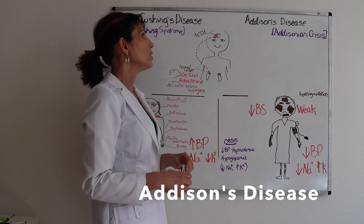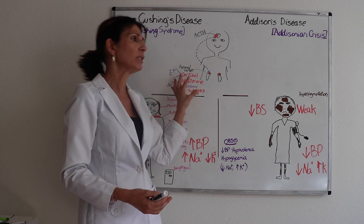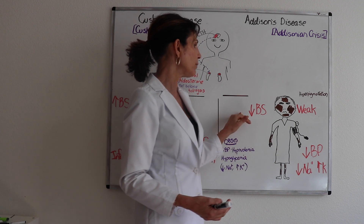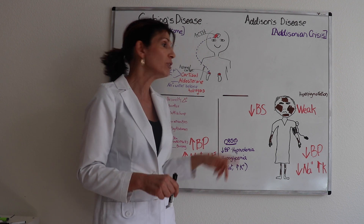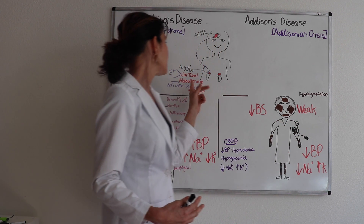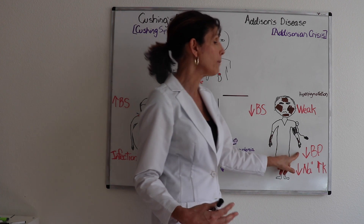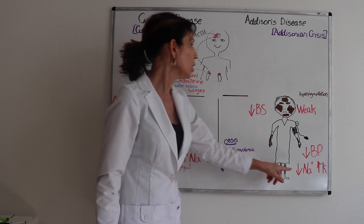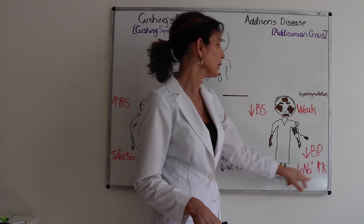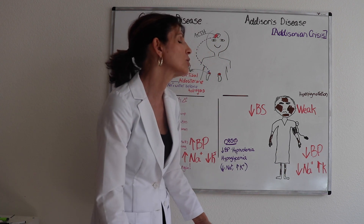Addison's disease is the opposite disorder — a depletion of adrenal cortex hormones. A depletion of cortisol causes hypoglycemia and decreased gluconeogenesis, along with weakness and lethargy. Because of hypoaldosteronism, the patient is hypotensive. Decreased aldosterone reabsorption means they will be hyponatremic and potassium will be reabsorbed, creating opposite fluid and electrolyte imbalances to Cushing's. The patient presents as lethargic.